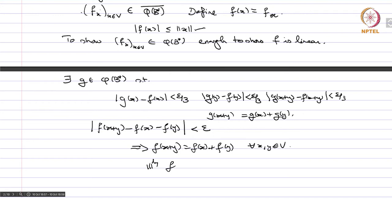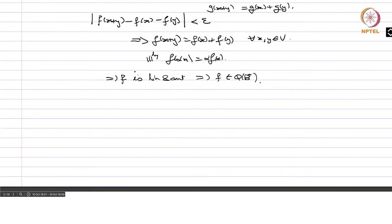Similarly we can prove f(alpha x) equals alpha times f(x) in the same way. So this implies f is linear and continuous, and therefore f belongs to phi(B-star). Therefore phi(B-star) is closed, hence it is compact, and phi is a homeomorphism, so B-star is also compact. This proves the Banach-Alaoglu theorem. By going to the weak-star topology the open sets become fewer and larger, so the chances of a set being compact are better, and the closed unit ball which would not be compact in the norm topology is now compact.